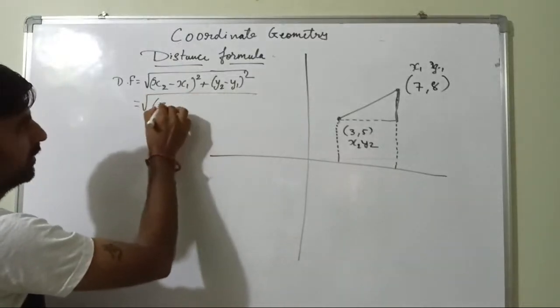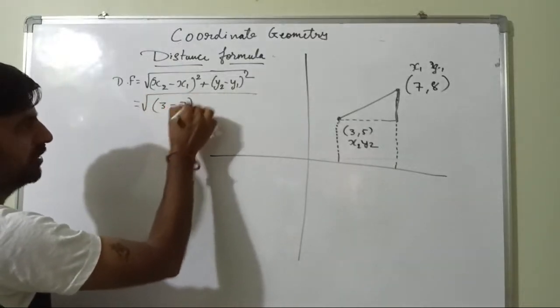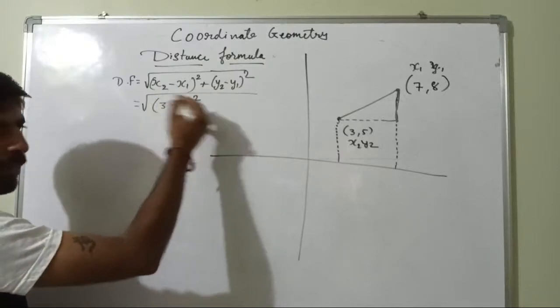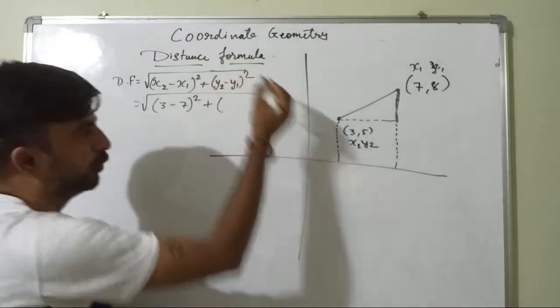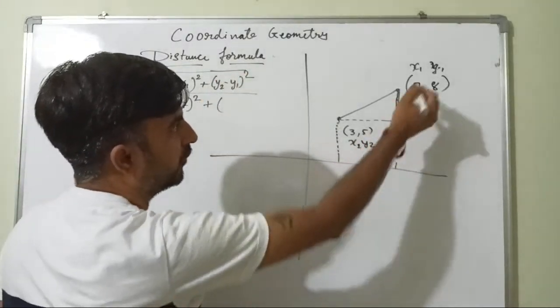x2 that is 3 minus 7 or 7 minus 3 whole square is there. So negative square or positive square will become same. That's why plus here y2 minus y1. So y2 is 5.